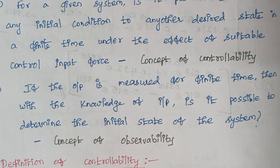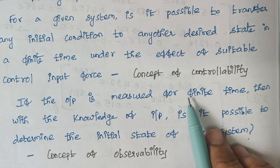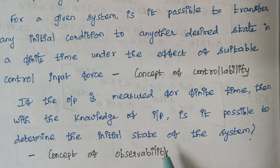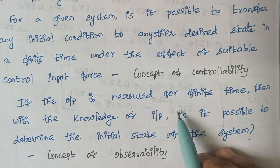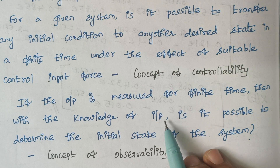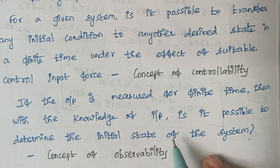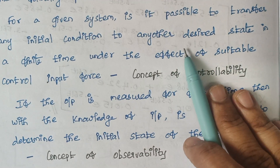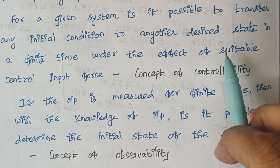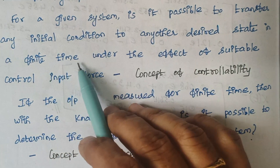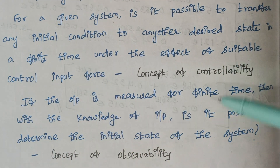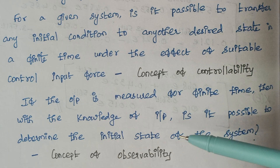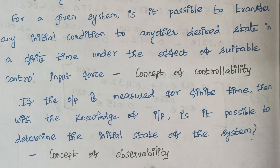The next thing is: if the output is measured for a finite time and we know the input, is it possible to determine the initial state of the system? This is just the reverse of the previous case. Here we are measuring the output and we know the input — whether it is possible to judge the initial state of the system. This concept is known as observability.